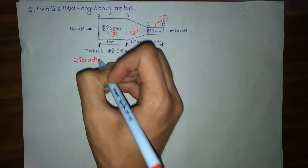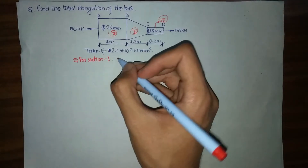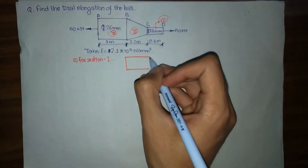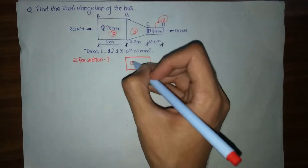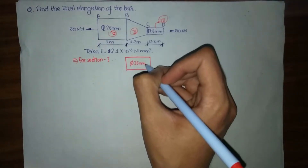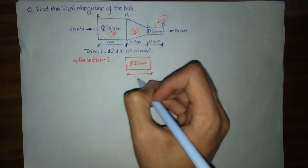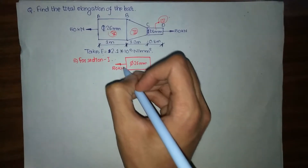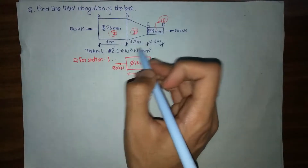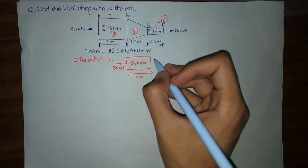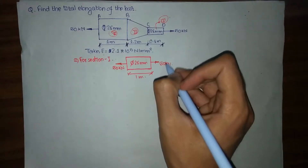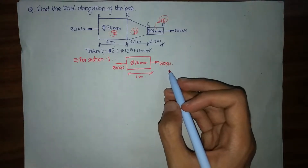For section one, we draw the figure: diameter 26 mm, length 1 meter, and a force of 50 kN acting at side A. Since the whole body is in equilibrium, a force of 50 kN must also act at the right in order to maintain equilibrium. This is our figure for portion one.